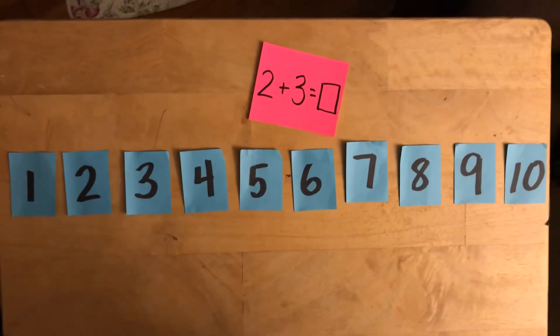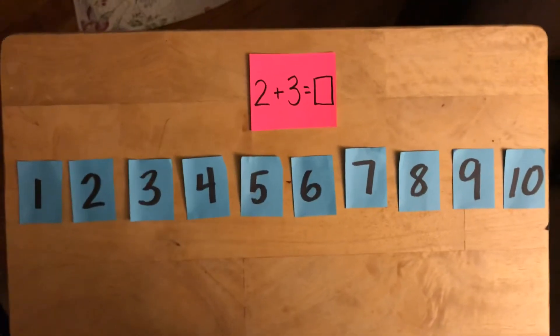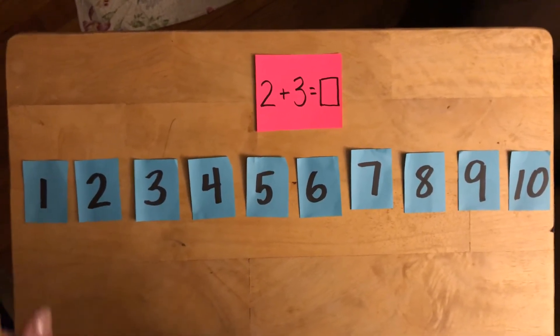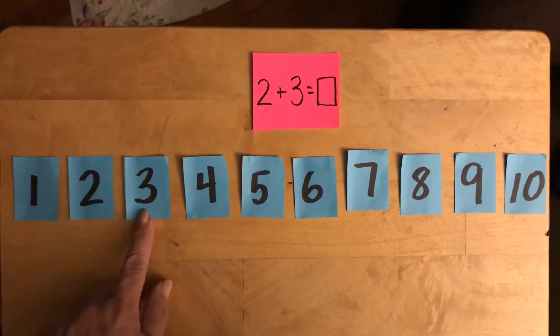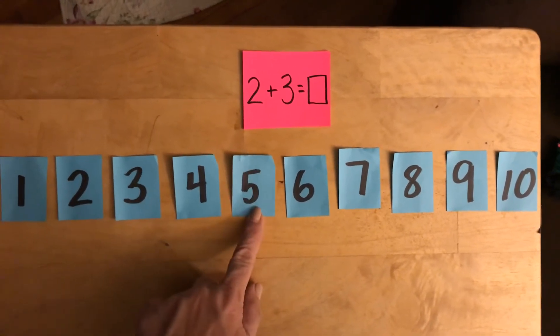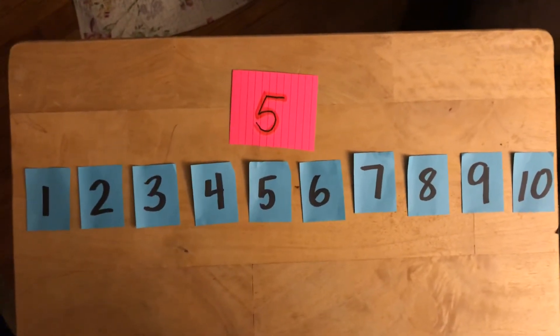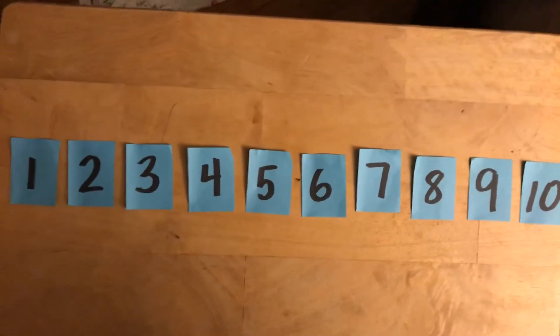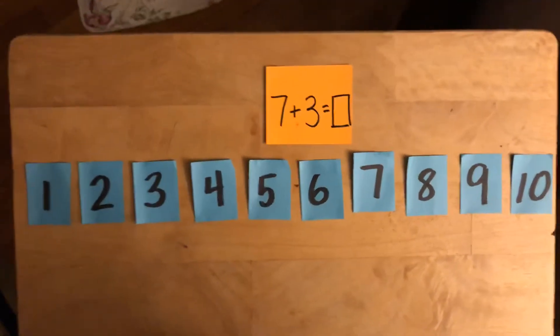There you go. Use my number line. Let me straighten that out. There you go. A 5. 2 plus 3 equals 5. All right. I have a few more. There you go. Here is this one.